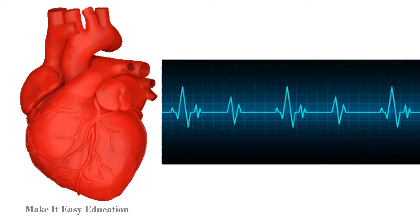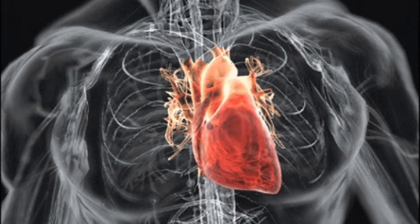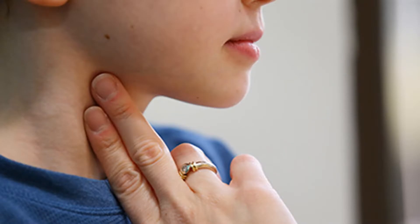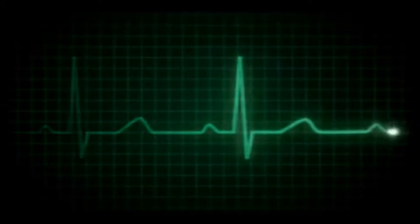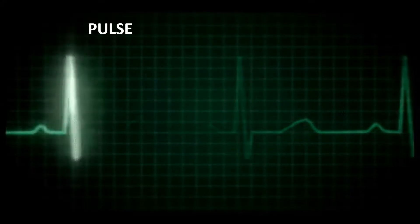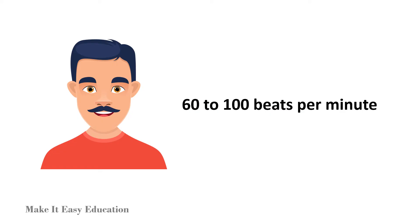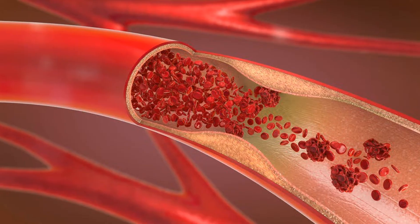The rhythmic movement that the heart makes while pumping blood is called the heartbeat. We can feel this movement at different places on our body, such as the wrist or the neck — a light pumping movement called the pulse. The method of checking pulse at the wrist is called palpation. For an adult human being, the pulse rate can vary from 60 to 100 beats per minute.